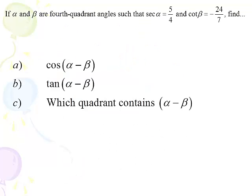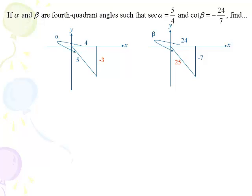Moving on to the next problem: if alpha and beta are both fourth-quadrant angles such that the secant of alpha is 5 fourths and the cotangent of beta is negative 24 sevenths, we're going to find cosine of alpha minus beta, tangent of alpha minus beta, and which quadrant contains alpha minus beta. Alpha has secant 5 fourths so cosine is 4 fifths and the third side is negative 3. Beta has cotangent negative 24 sevenths so tangent is negative 7 twenty-fourths and the hypotenuse is 25. Label the triangles in the correct quadrant and the rest is easy.